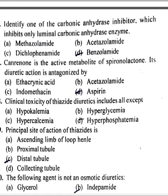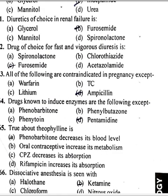Which of the following agent is not an osmotic diuretic? Indapamide. Diuretic of choice in renal failure is furosemide. Drug of choice for fast and vigorous diuresis is furosemide.